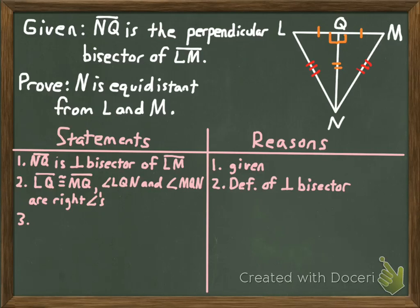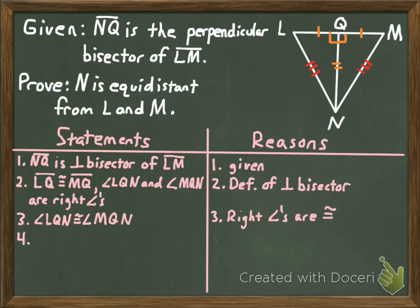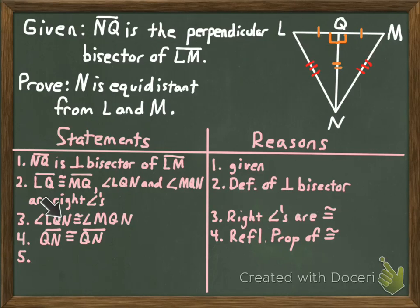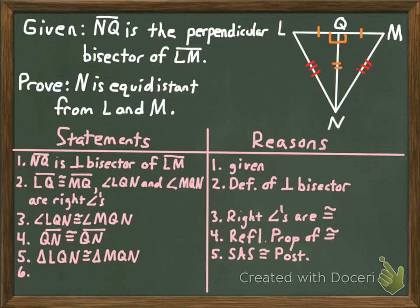The next step is proving the two triangles are congruent. We have one pair of congruent sides and right angles, but we need to prove those right angles are congruent and establish the second pair of sides for SAS. Angle LQN is congruent to angle MQN because right angles are congruent. Segment QN is congruent to segment QN by the reflexive property. So triangle LQN is congruent to triangle MQN by side-angle-side. Therefore segment NL is congruent to segment NM by CPCTC.